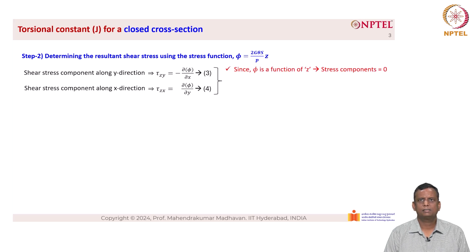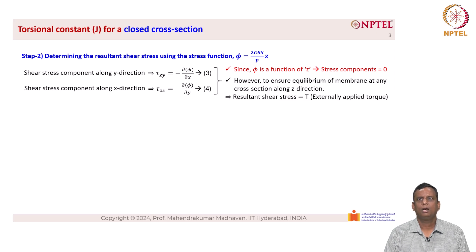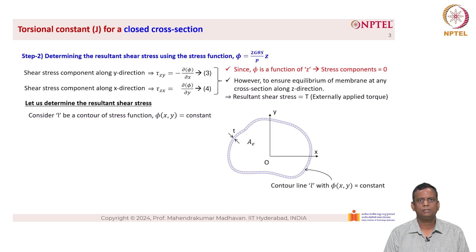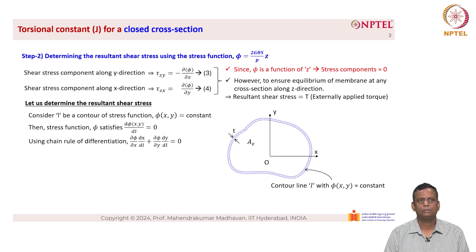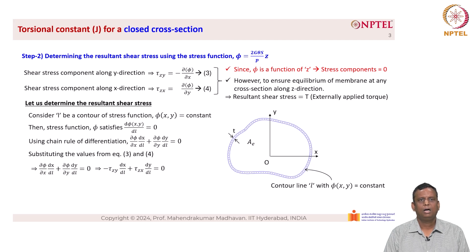Since phi is a function of z, the stress components should be zero. However, to ensure equilibrium of the membrane at any cross section along the z direction, the resultant shear stress should equal T, the externally applied torque. Consider the contour L_b where the stress function φ = constant. Then d/dl[φ(x,y)] = 0, giving by chain rule: (∂φ/∂x)(dx/dl) + (∂φ/∂y)(dy/dl) = 0. Substituting equations 3 and 4: −τ_zy(dx/dl) + τ_zx(dy/dl) = 0 (equation 5).